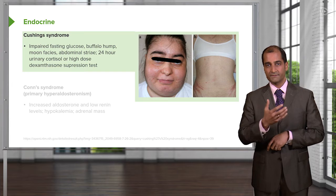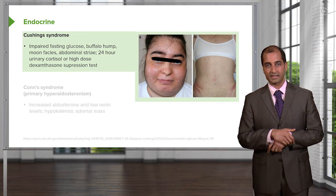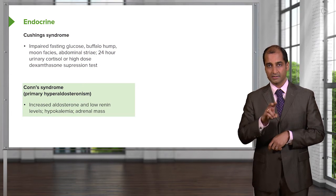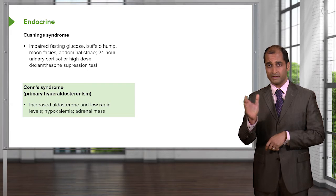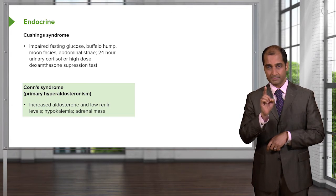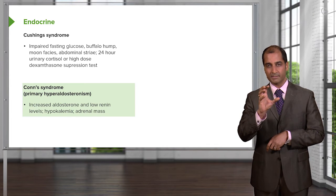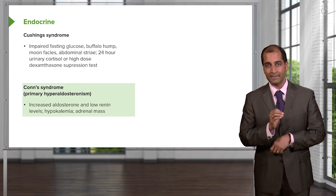If you produce too much aldosterone, you may cause increased blood pressure resulting in secondary hypertension — that's Cushing's. Now be very careful, because our next differential for secondary hypertension is Conn's syndrome. Conn's syndrome will not have moon face, buffalo hump, and so forth. Conn's syndrome is a primary hyperaldosteronism. It's all about terminology — if you're not careful, it's easy to miss a question or misinterpret your patient.